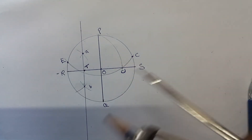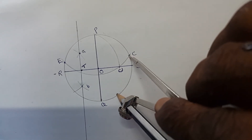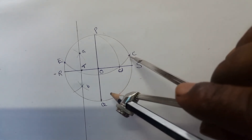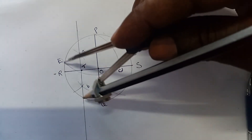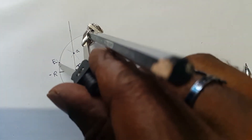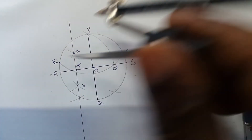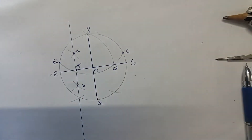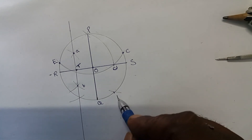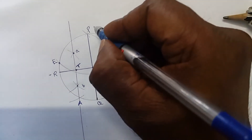With the same radius, draw another two arcs. Similarly, with the same radius, draw another arc. Finally, with E as center, draw an arc. Similarly, draw another arc. The points obtained are marked as B, A, and D.